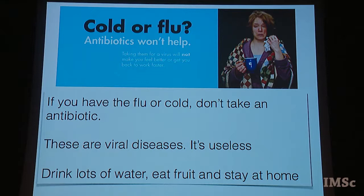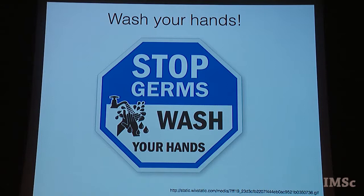A mutant bacterium that has changed from the original can survive an antibiotic because it has developed some feature — say, a different membrane. Because it survives, it multiplies and takes over the population. Gradually all you have are mutant bacteria that can resist one or more antibiotics. What can you do? Two simple things. First: if you have a cold or flu — viral diseases — don't take an antibiotic. Antibiotics work for bacteria, not viruses. Drink lots of water, eat fruit, and stay at home so you don't transfer it to others. Second: wash your hands. If you have been out, travelling on trains, touching metal rods that many others have touched, wash your hands thoroughly — up to your elbows, under your nails, between your fingers.